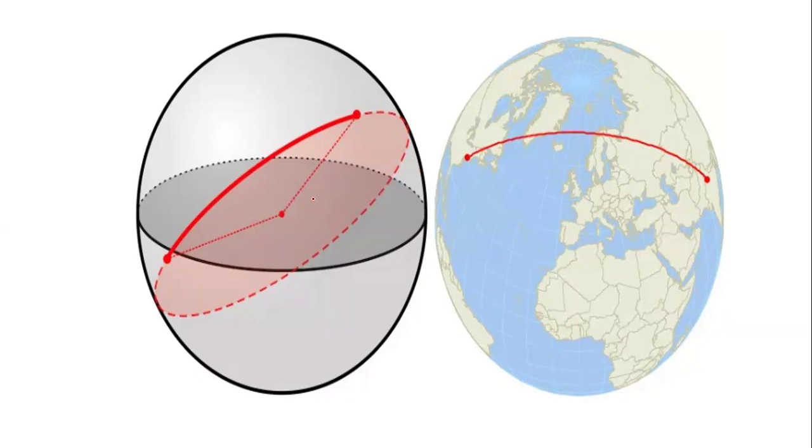But in certain regions, say in the polar regions, great circle routes cannot be followed because of extremely cold weather. The ships cannot sail between the icebergs.